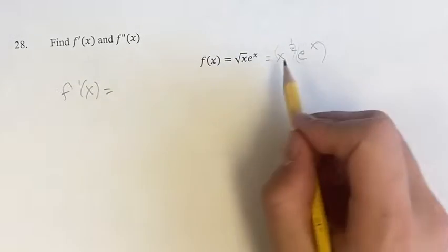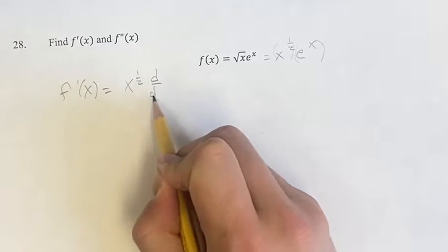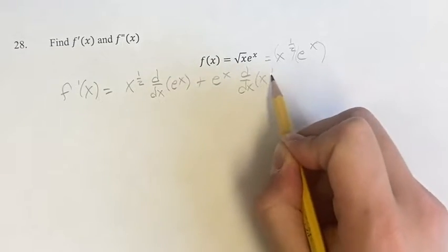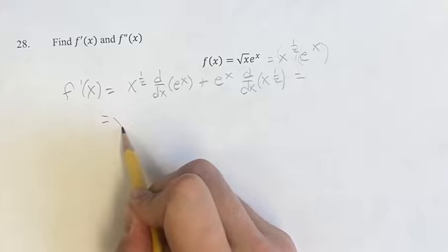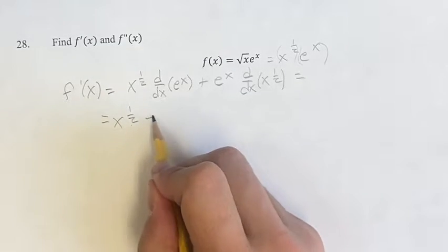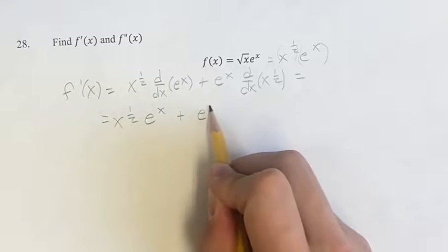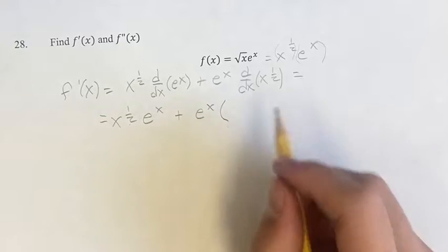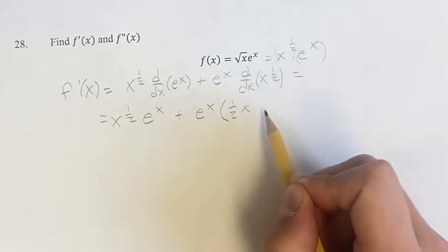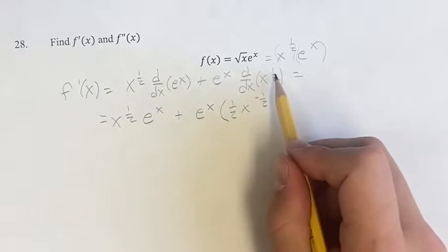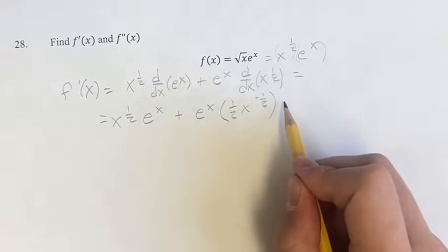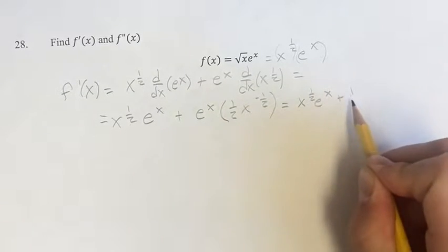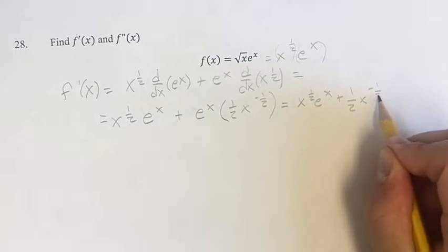The product rule says we're going to have x to the 1/2 times the derivative of e to the x, plus e to the x times the derivative of x to the 1/2. Simplifying: the derivative of e to the x is e to the x, and for x to the 1/2 we have a power function — bring down the exponent and subtract 1, giving 1/2 minus 1 which is negative 1/2. So this becomes x to the 1/2 times e to the x, plus 1/2 x to the negative 1/2 times e to the x.